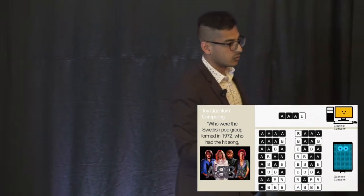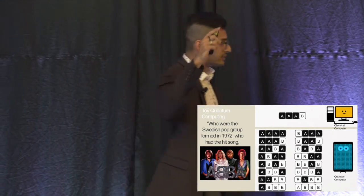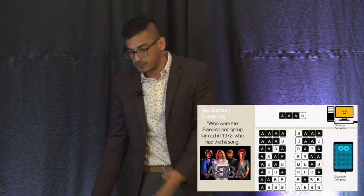Now, the classical computer would be in one of these states. So let's just pick one at random. Let's say it can be in state A, A, A, B.